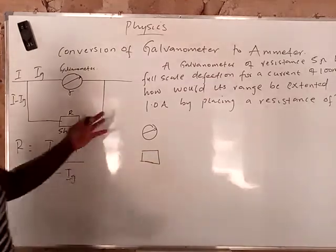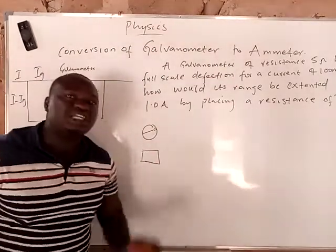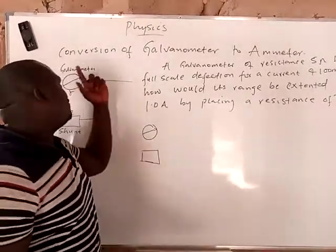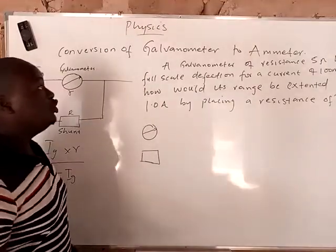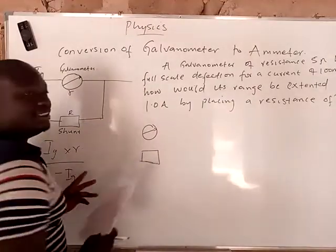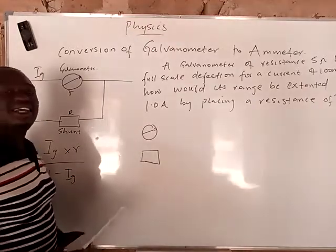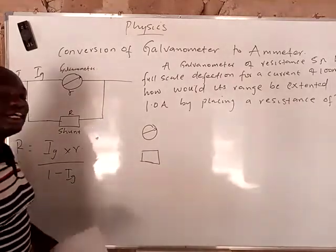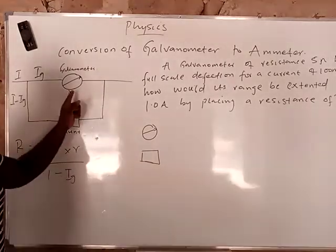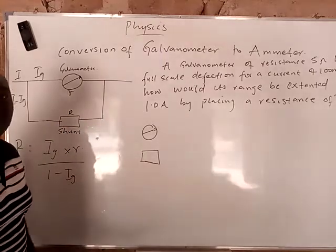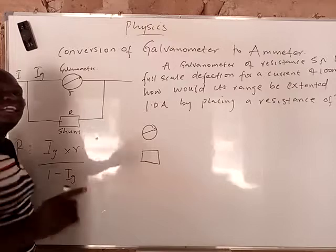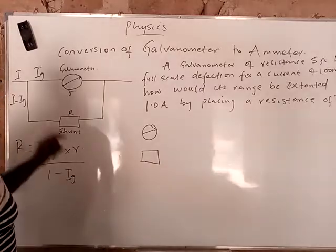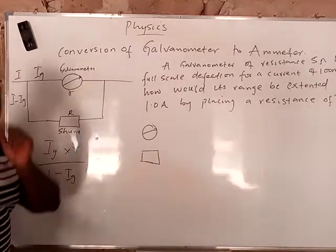For you to convert a galvanometer to an ammeter, if you are converting a galvanometer to an ammeter, you have to connect it first with a low resistance. The name of that low resistance is called the shunt. And that low resistance must be connected in parallel.